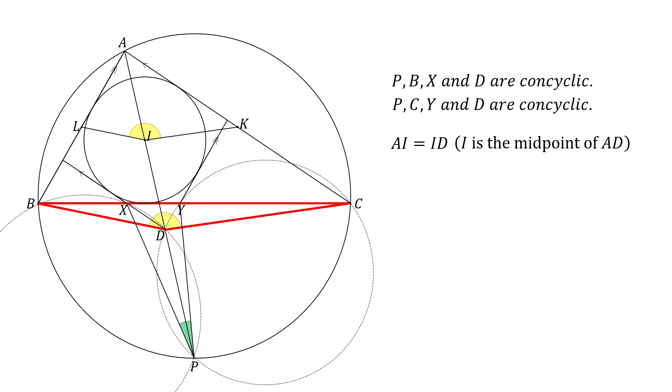We have already shown that PBXD is concyclic. Arc XD subtends angle XBD and angle XPD, which are equal. Similarly, PCYD is concyclic, and the angle YCD and angle YPD are subtended by the same arc, making them equal.